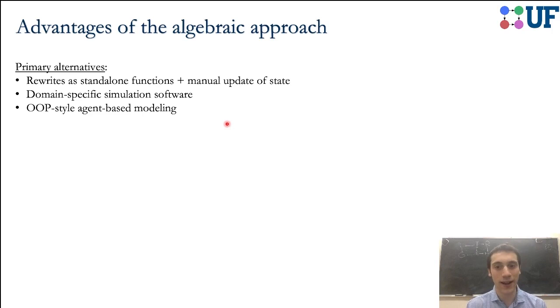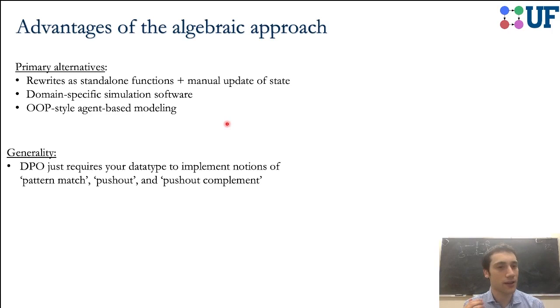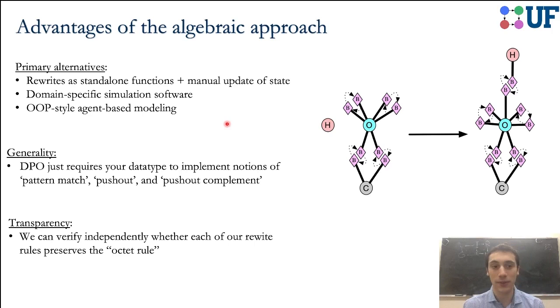There's also agent-based modeling, which is more object-oriented style, where you define your agents which interact, have sort of code functions associated with them, which modify an environment, and then you sort of let all those agents go loose in a simulation. I'll say that our approach has a certain level of generality because this DPO really works for any kind of data structure, as long as it has a notion of pattern match, pushout, and pushout complement, which are essentially related to the idea of how do you glue things together.